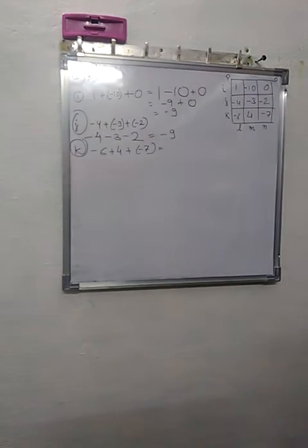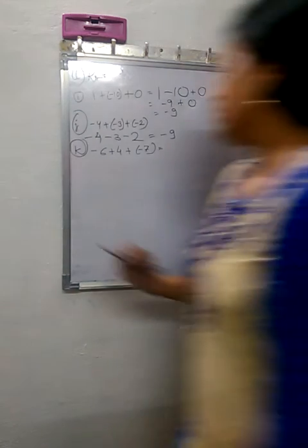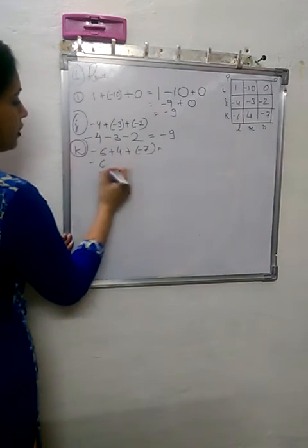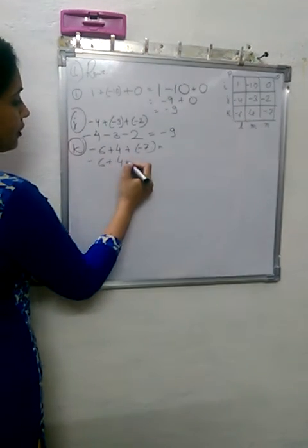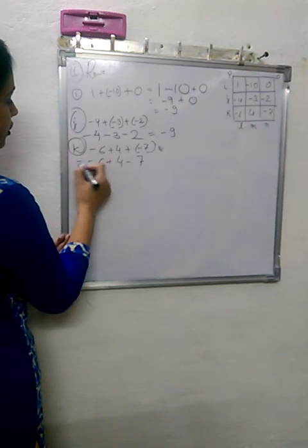Now we go to row K. It is minus 6 plus 4 plus minus minus 7. Now I have done it here.